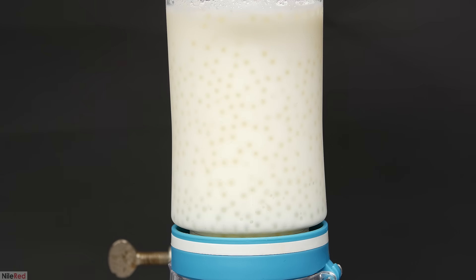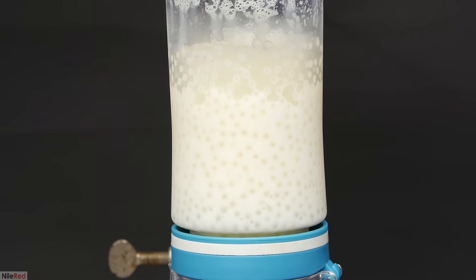In the continuous method, a column similar to this is used, but it's a lot longer. Fresh milk is added continuously from the top and it's trickled out from the bottom at a steady rate. This causes the milk to move slowly over the beads, and by the time it reaches the bottom, nearly all of the lactose has been hydrolyzed.